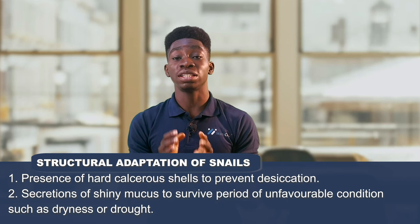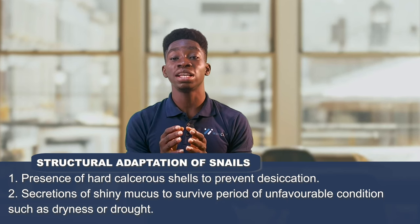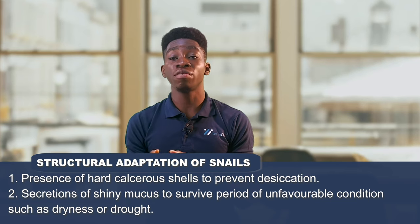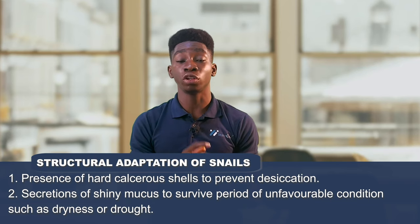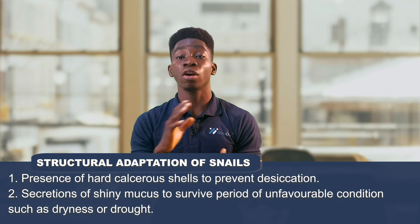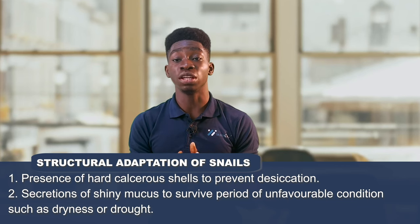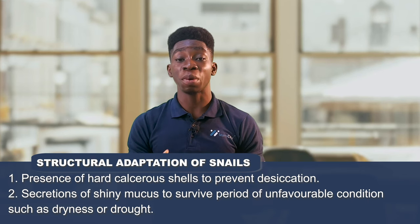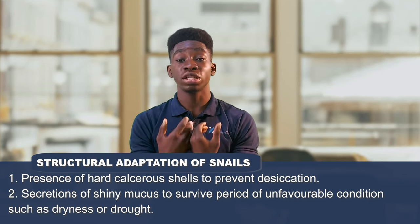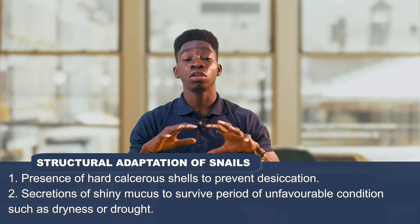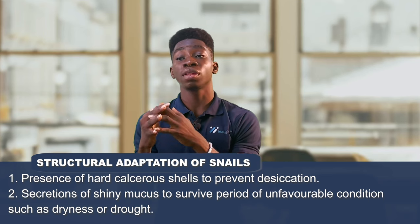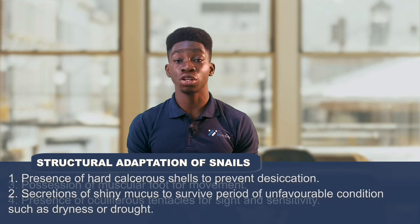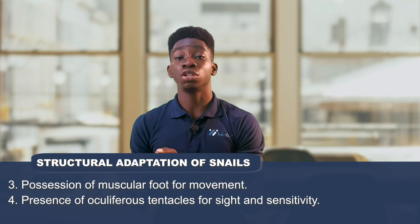Another adaptation that a snail possesses is the secretion of mucus to survive periods of unfavorable conditions. That mucus encloses or covers the snail to survive hot or dry conditions. This process, by which the snail goes into a state of rest to survive an unfavorable dry or hot condition, is called estivation.